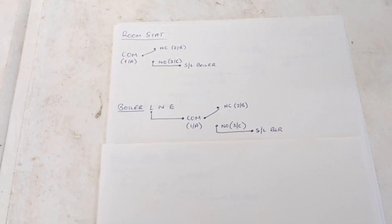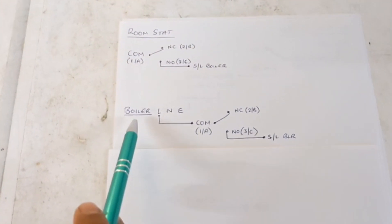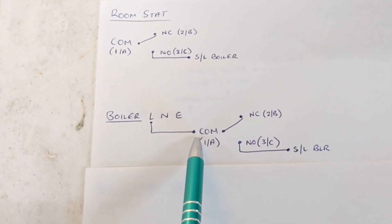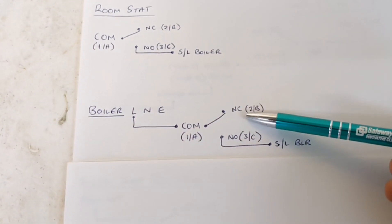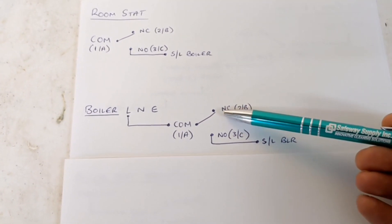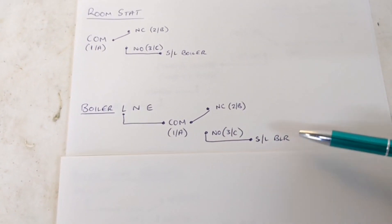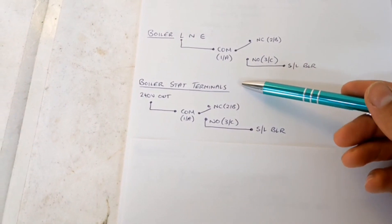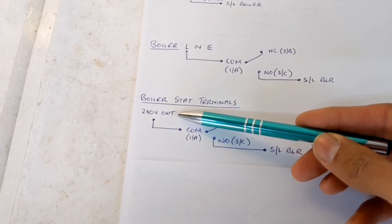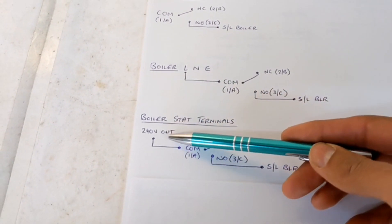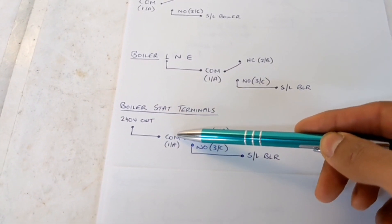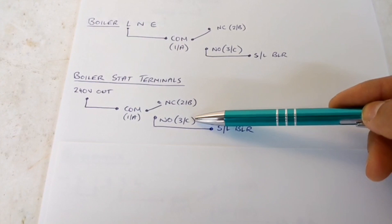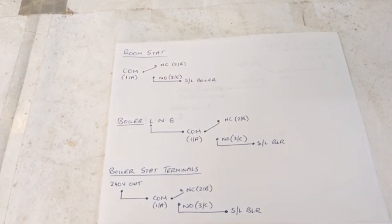Next up is how do you get power to the common. With a combi boiler you're going to have your live, neutral, and earth — you can piggyback off the live in the boiler and that goes to your common on your room stat. At rest with no demand it will be sitting at normally closed. When you turn the room stat up and hear that click, that's gone over to normally open — the switch live on the boiler — and the boiler fires up. Some boilers will actually have stat terminals with a dedicated 240 volt output, so you don't have to piggyback off the live. Same thing applies: goes to common, sits at normally closed at rest, flicks to normally open on demand, and goes to the switch live on the boiler.